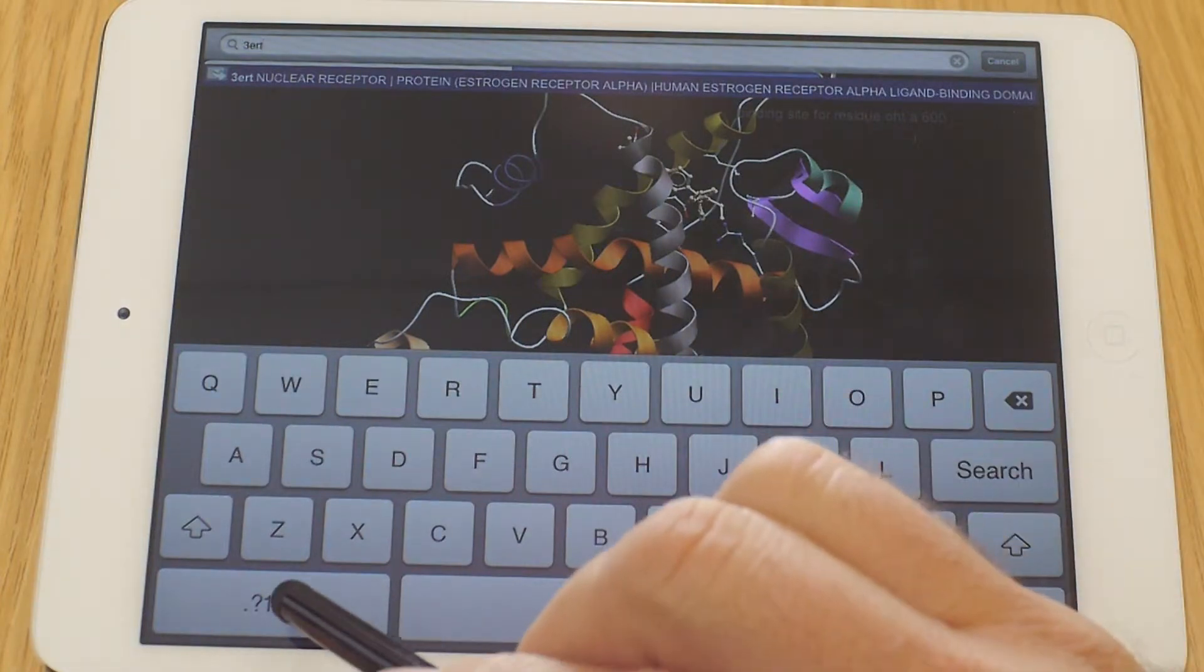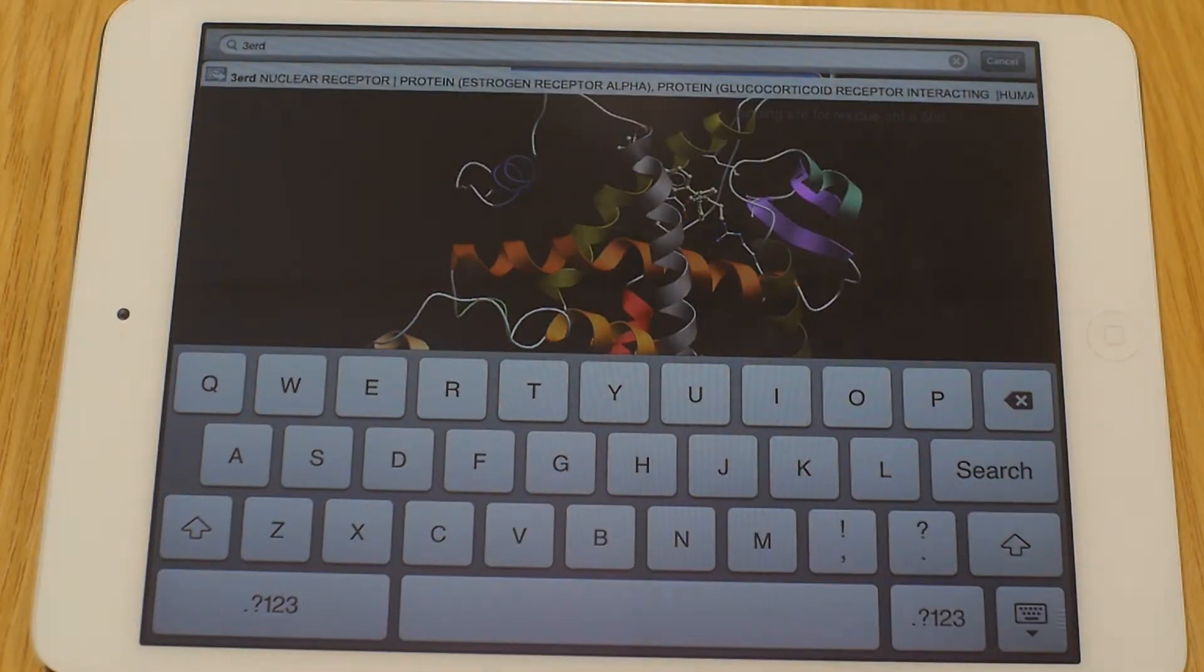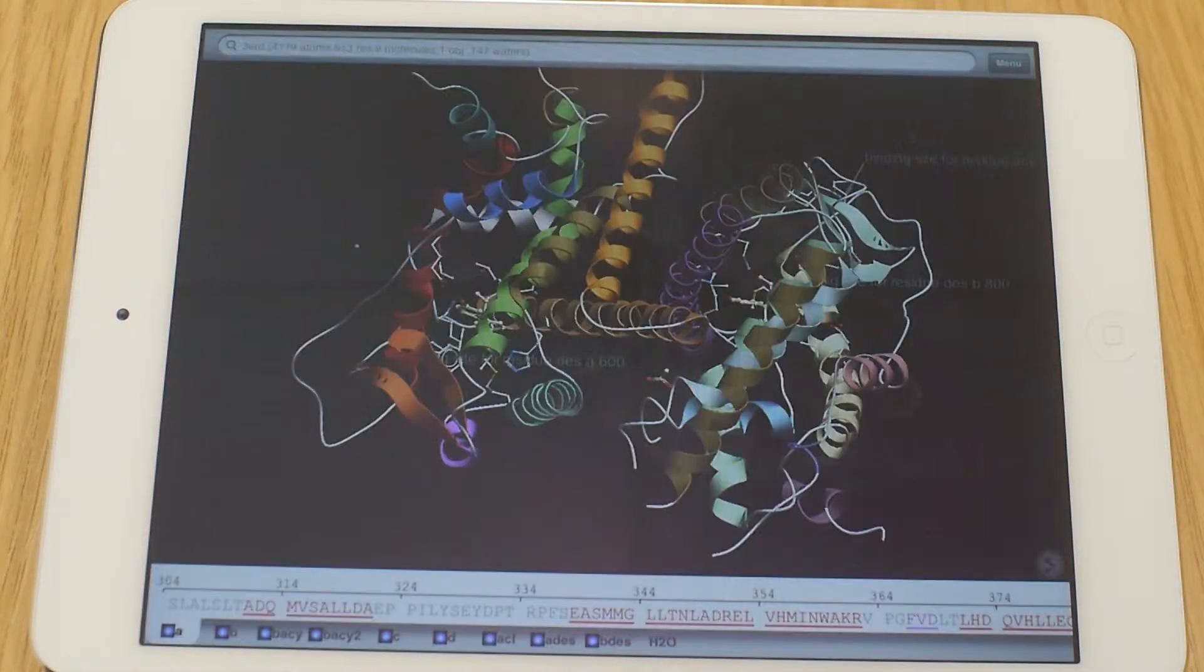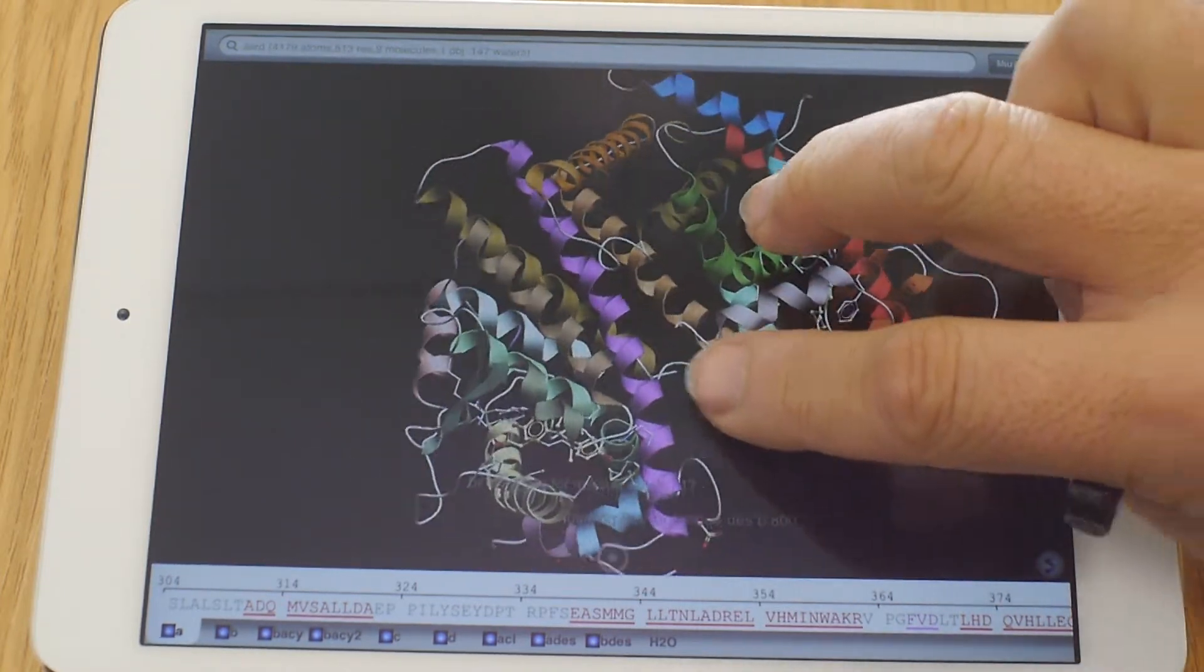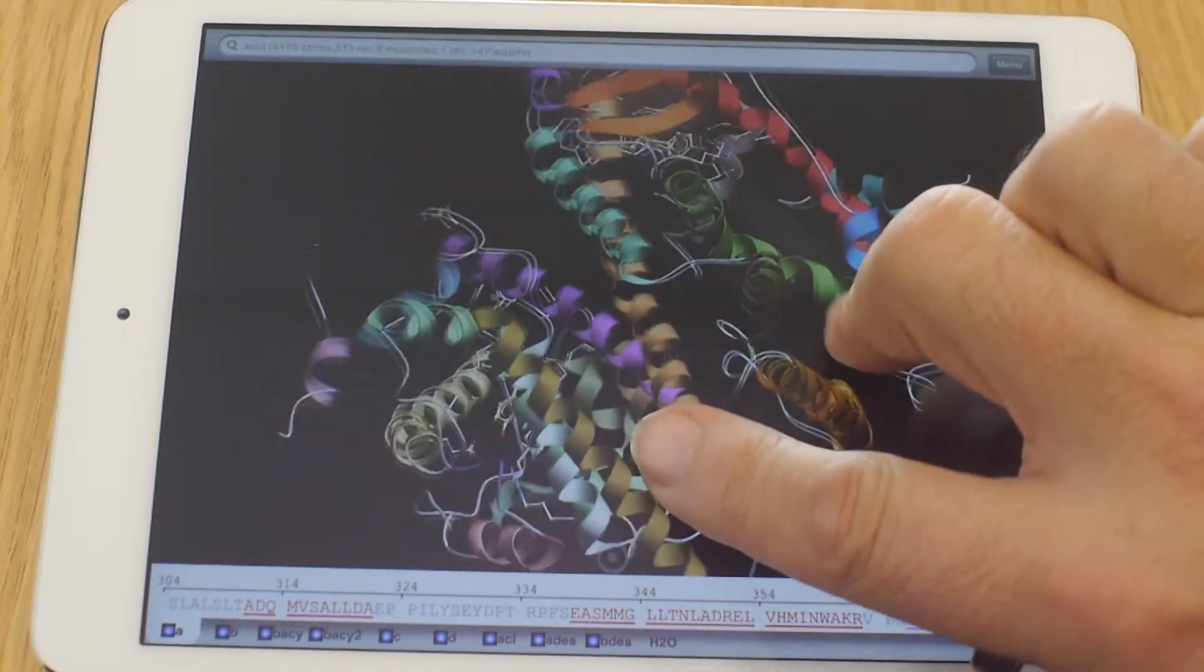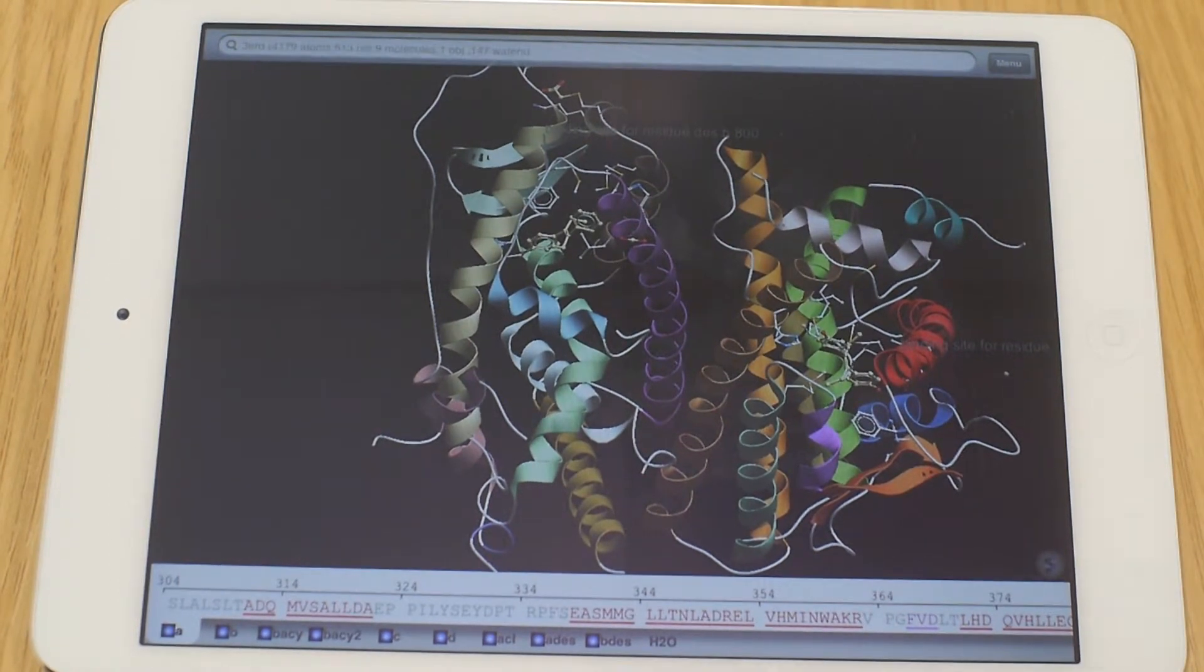Let's find another one. 3ERD this time. And this looks a bit more complex because what you see here is that several molecules are actually here. So this is several molecules that form the crystal. This is one crystal unit. This is how it crystallized. It crystallized as a dimer. So when you look now in the sequence view, then you can see that there's loads of little buttons called A, B, B acetylated, B atzi, A acetylated, C, D acetylation, A dash, B dash, water. So let's see what happens if you press those buttons.